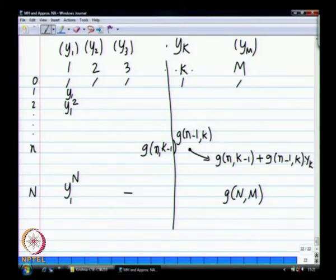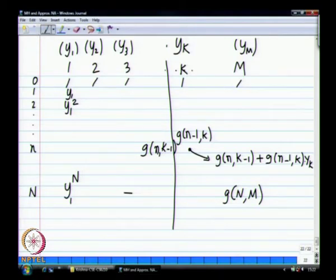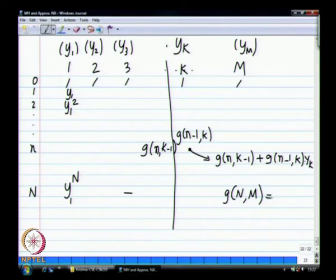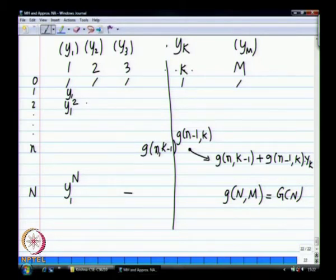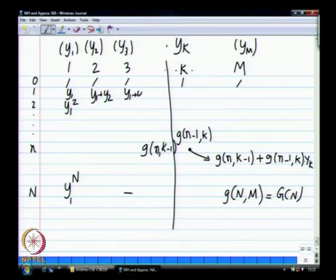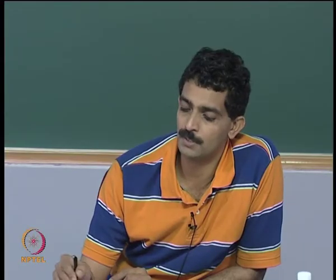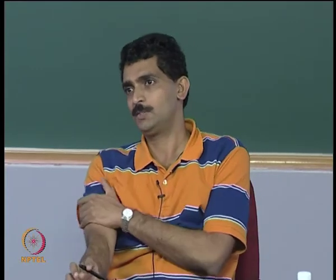Without having to enumerate all C(n+m-1, m-1) states, you simply have n times m computations. You fill the table row by row, generating g(1,m), g(2,m), and so on. So g(1,1) is y1, then g(1,2) is y1 plus y2, and g(2,2) would be y1 squared plus y1*y2 plus y2 squared, since only the value coming from above gets multiplied by another factor of y_k.